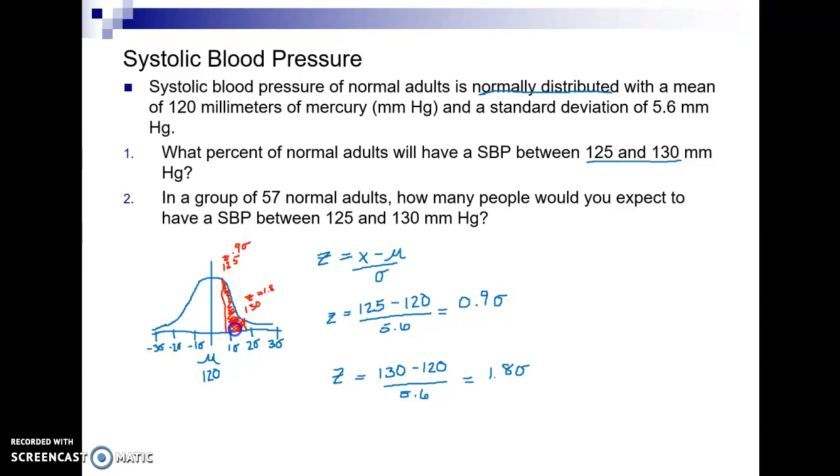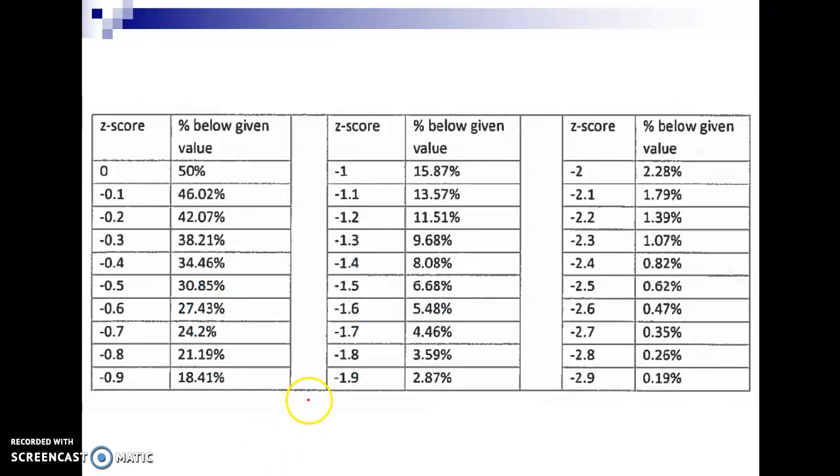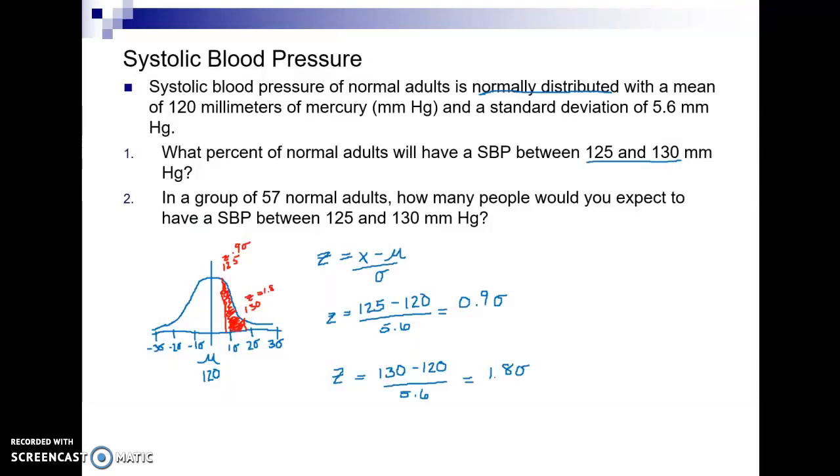I want this little section of the curve, what percent of people fit in there. So in order to get percents I need to look up the percents of these two Z-scores. So I go to my chart and my first value there is 0.9 so 18.41 percent and my other value is 1.8 so 3.59 percent. So take those back to my problem.